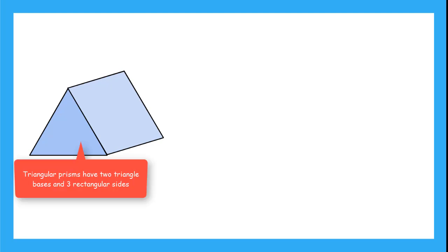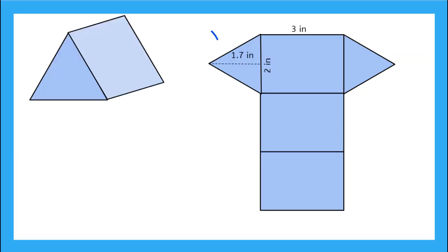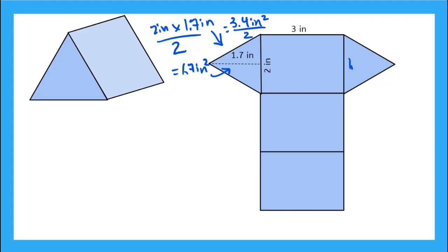Now what about a triangular prism? What would it look like flattened out? This triangular prism would have 2 triangle bases and 3 rectangle sides. So the surface area would be the sum of the area of the triangles plus the sum of the area of the rectangles. The area of the triangular base is base times height divided by 2: 2 inches times 1.7 inches divided by 2, which gives me 1.7 inches squared. The area of one rectangular side is 3 inches times 2 inches, which gives me 6 inches squared — the same for all 3 rectangles.